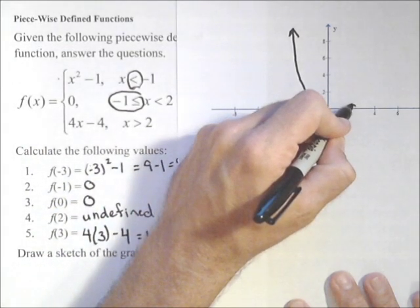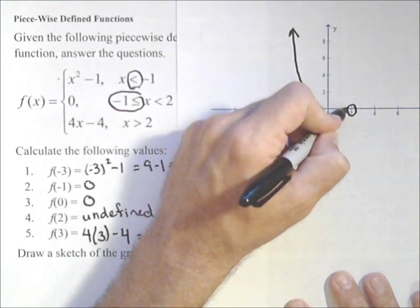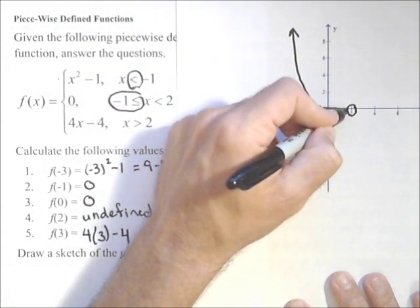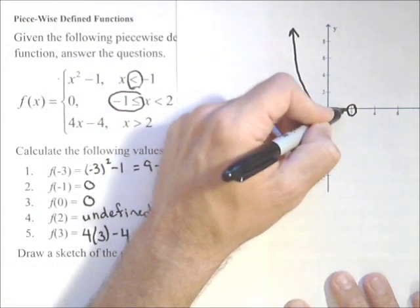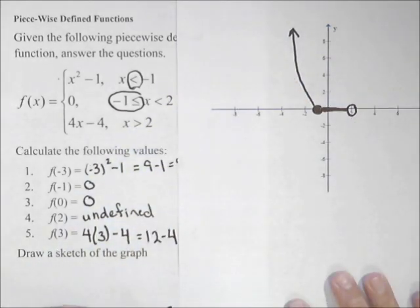So at two, I'm going to want to put an open circle, and now the function is just zero, which means it's just going to go right along the x-axis like so.